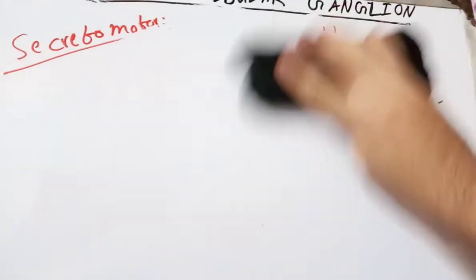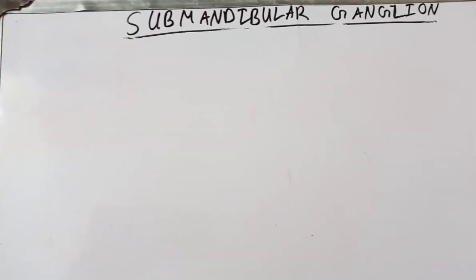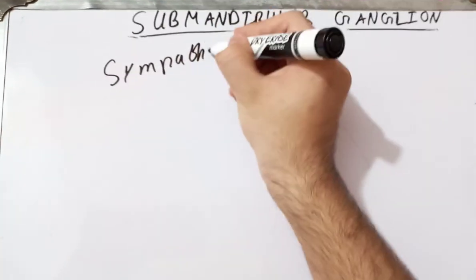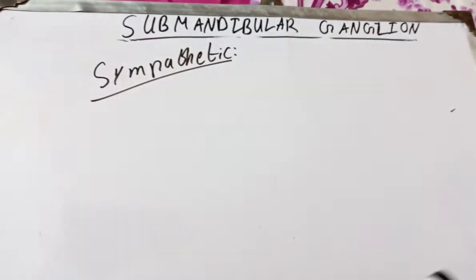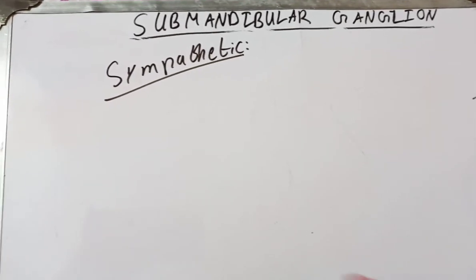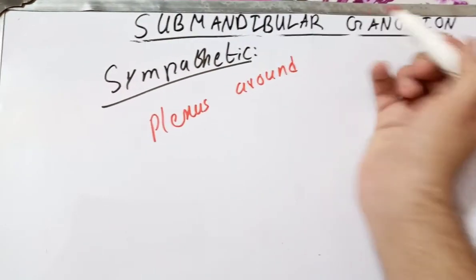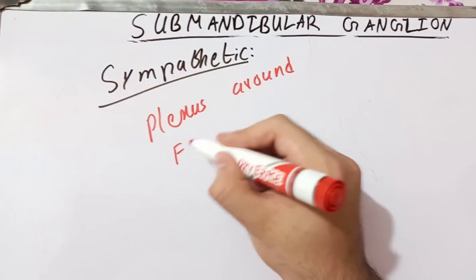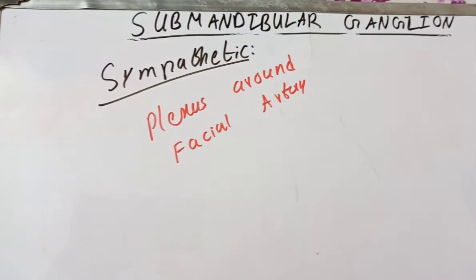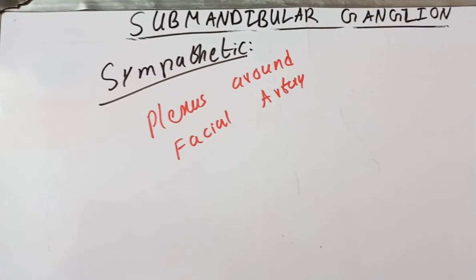Many students get confused between the greater petrosal nerve and the chorda tympani nerve because both are branches of the facial nerve. Now, the sympathetic supply is very easy — sympathetic supply almost always comes from the plexus around some artery. The artery related to the submandibular gland is the facial artery, so the sympathetic supply comes from the plexus around the facial artery, which comes from the superior cervical ganglion. These are post-ganglionic fibers, so they do not relay here; they provide vasomotor supply to the submandibular and sublingual salivary glands.